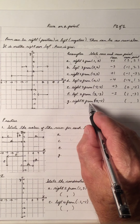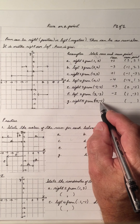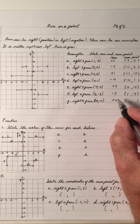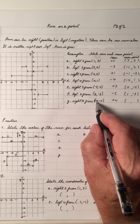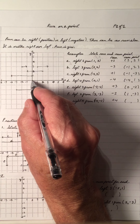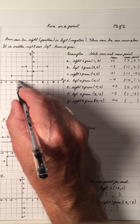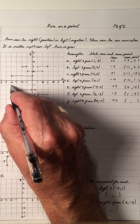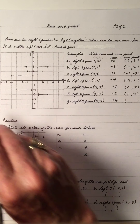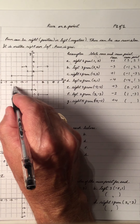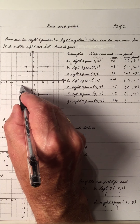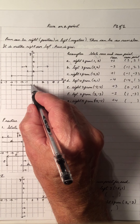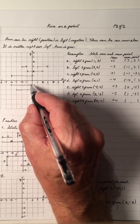Right four from (-4, -1). Right four is a plus four. So let's plot the point (-4, -1): negative four on the x, negative one is one down — there's the point. And we're going right four: one, two, three, four. This new point: x is zero, y is negative one.